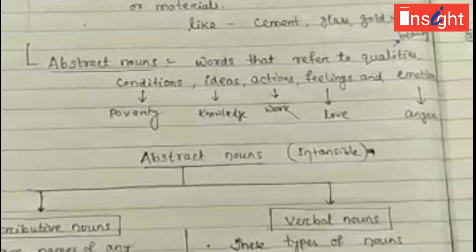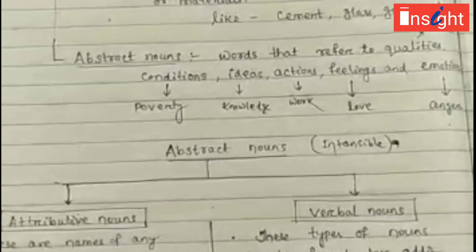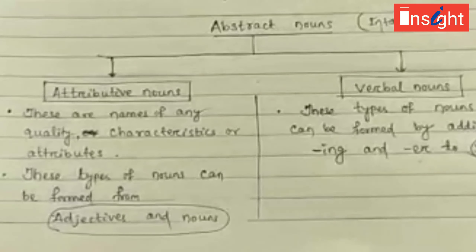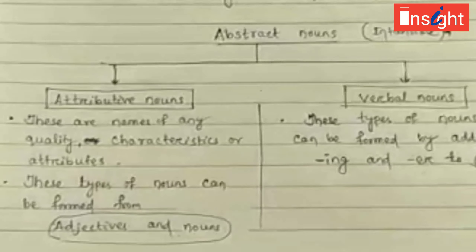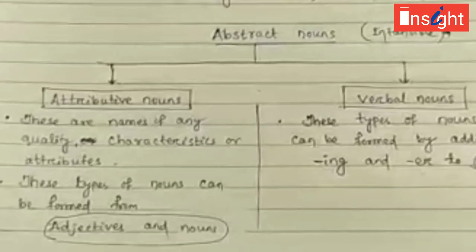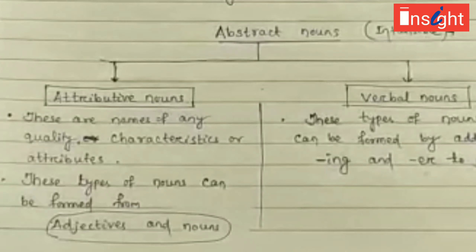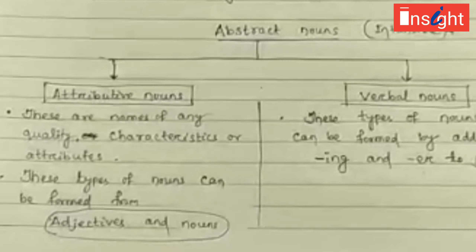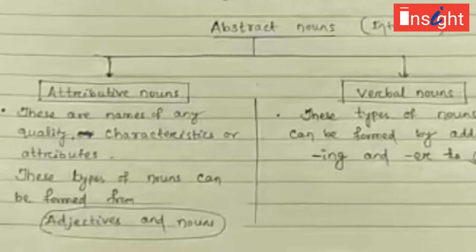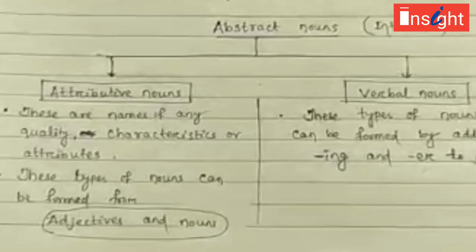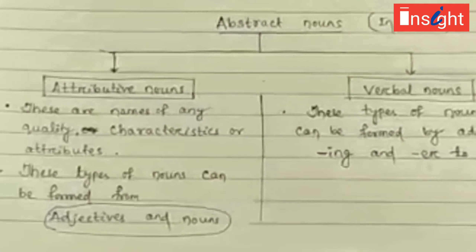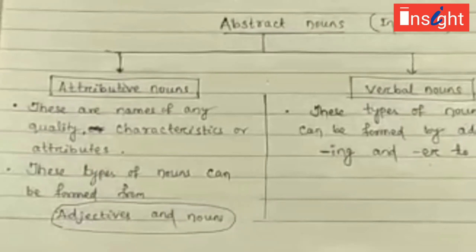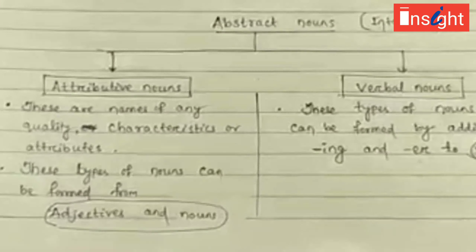In Class 8 we will focus basically on abstract nouns. Abstract noun is a type of intangible noun. All other nouns we can see, touch, or smell, but in the case of abstract nouns we cannot use our sense organs — that is why they are called intangible. Intangible means we cannot use our senses to determine them because they depend on feelings, emotions, actions, ideas, conditions, and qualities.